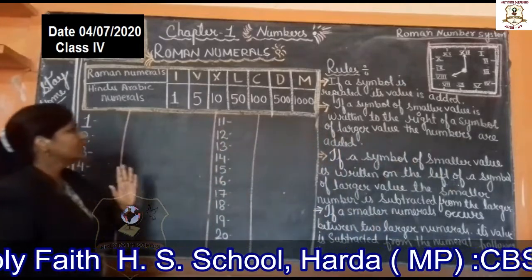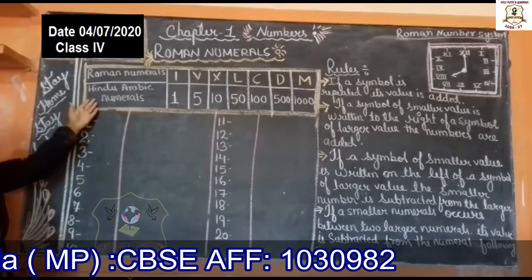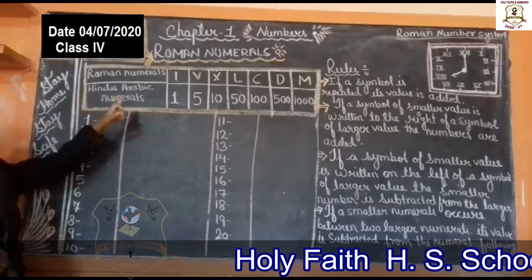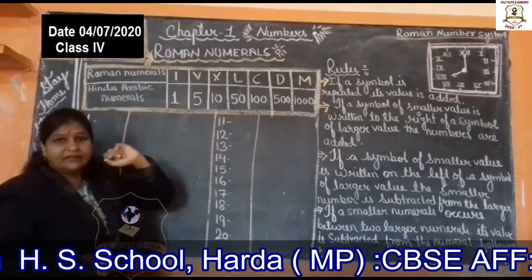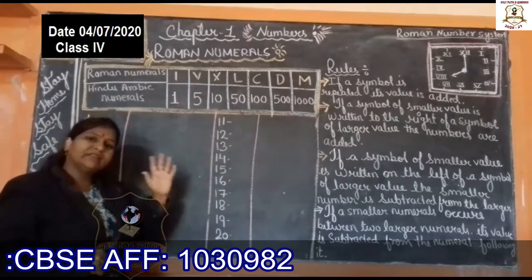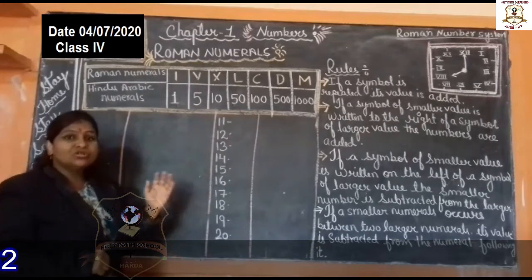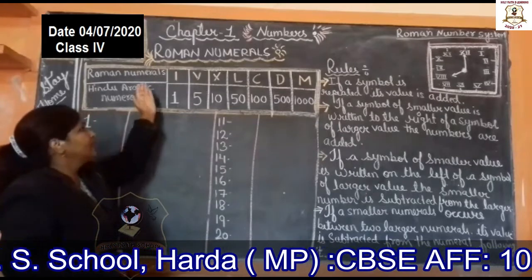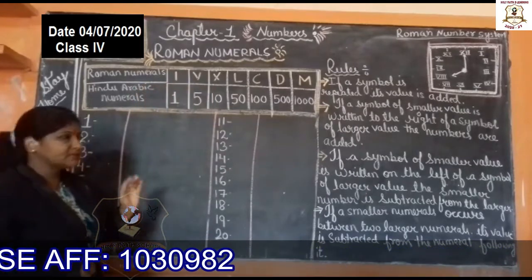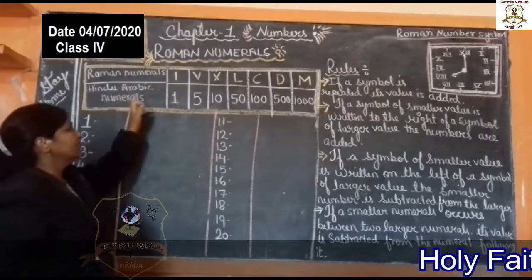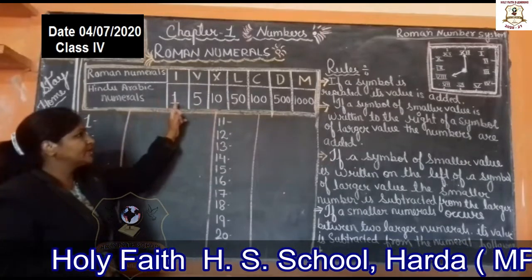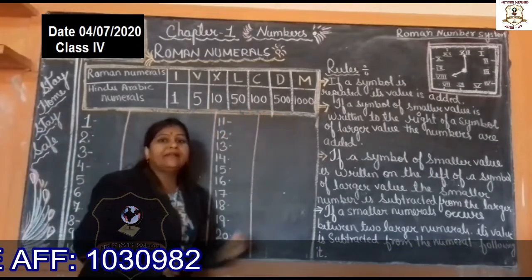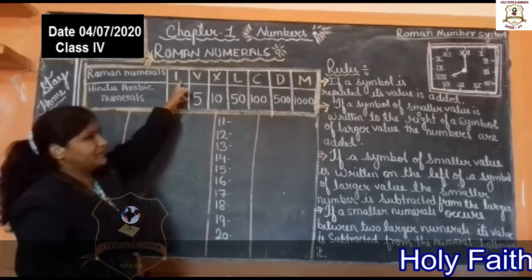Students, I made one table over here. This is a very important table. Please learn it by heart. Seven alphabets are written here. These alphabets are very important and are the only ones used to make Roman numerals. And here the Hindu-Arabic numeral values are given: 1, 5, 10, 50, 100, 500, and 1000 are the values of these Roman numerals.